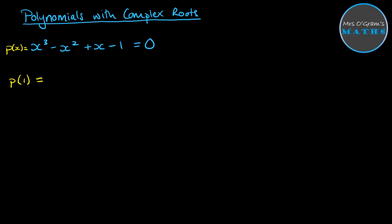So if we try p(1), we get 1 cubed minus 1. So we're down to 0. We get plus 1 minus 1. So that comes to 0. So we know that x minus 1 is a factor. We also know that x equals 1 is one of our roots.